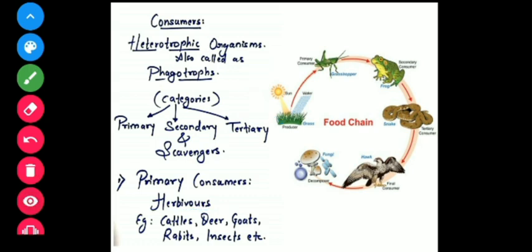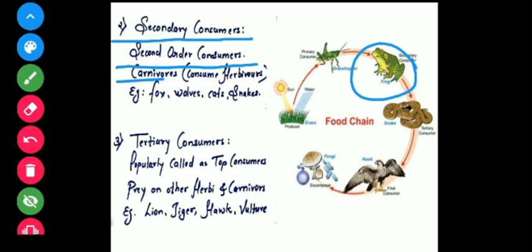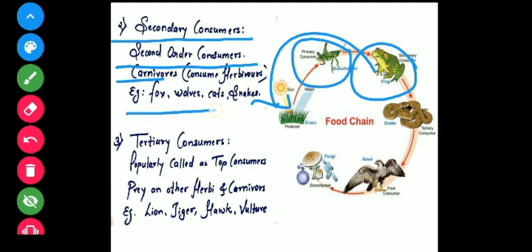Secondary consumers are the second order of consumers, which are carnivorous — flesh-eating animals. They will not eat the producer or green plants; instead they eat herbivorous animals or primary consumers. Examples are fox, wolves, cats, and snakes, depending on the food chain in different ecosystems.